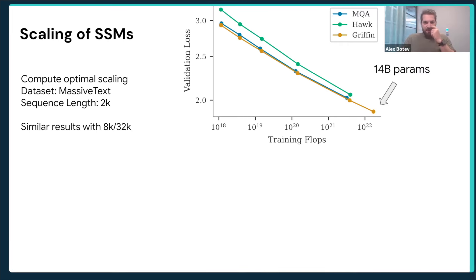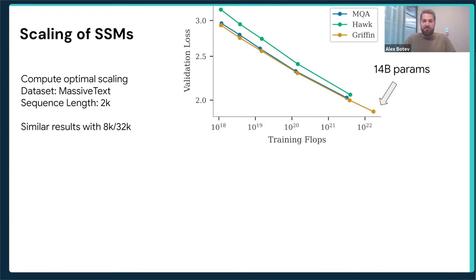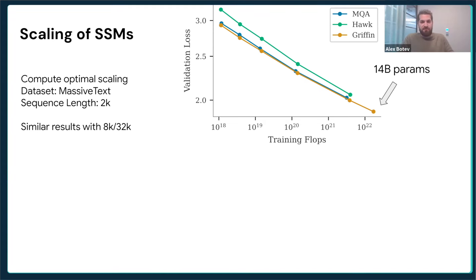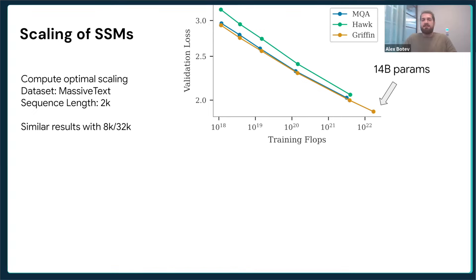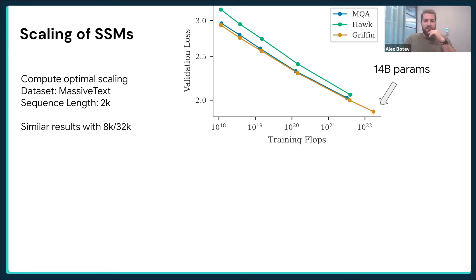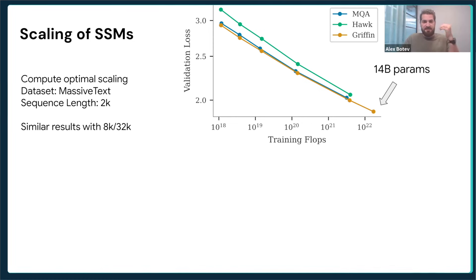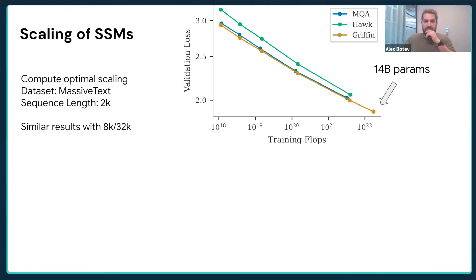Now for our results. This is a scaling law curve where we plot both Hawk, Griffin, and a very well-tuned multi-query attention transformer. Griffin perfectly matches the multi-query transformer and achieves the same scaling curve and performance. Hawk performs slightly worse, however as we increase the scale, the gap between Hawk and the other two seems to be closing.